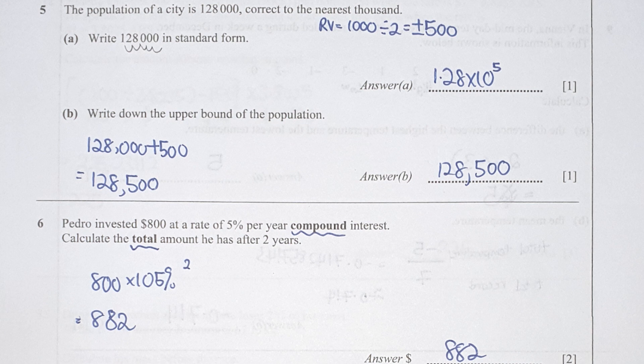Question 6 is pretty straightforward. They mention compound interest and want you to calculate the total amount. Just take 800 times 105 percent to the power of 2, and you get the result as 882 — corrected to the appropriate value.